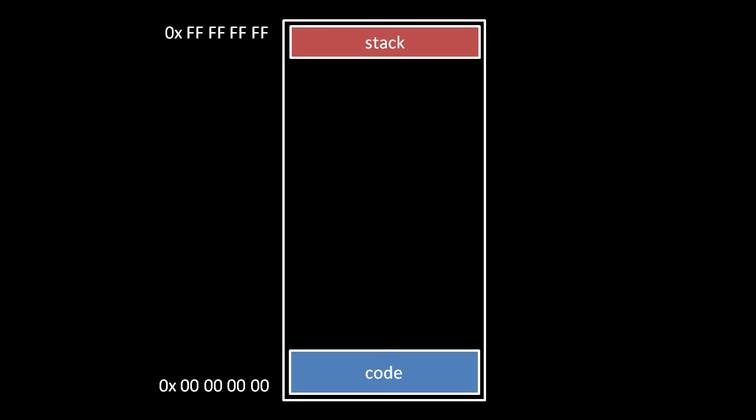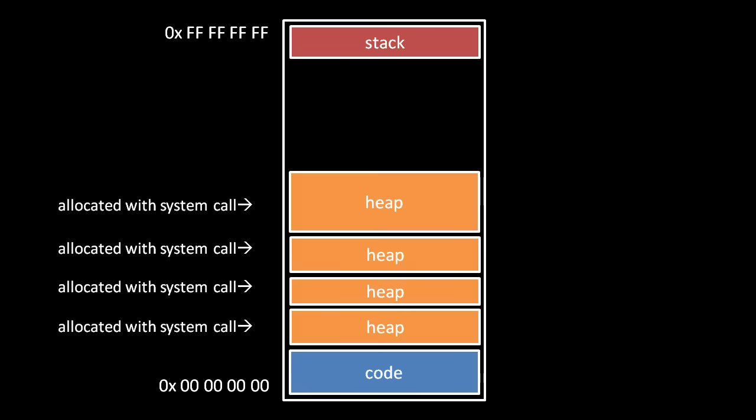Unlike the stack and text, however, no heap space exists when the process starts executing. Instead, the process must explicitly request chunks of heap storage from the OS with a system call. In the call, the process specifies what size contiguous chunk it wants, but the OS decides where to locate these chunks in the address space, and the chunk locations are not necessarily adjacent.